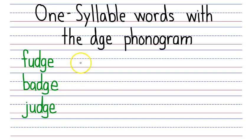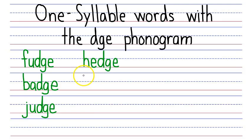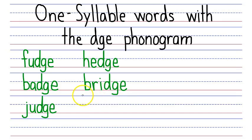Next word is hedge. You have the H that says H, the E that makes the short E sound, and a DGE. Next word is bridge. Bridge starts with the B that says buh and an R that says R, then the short I sound, and then the DGE phonogram that says J. B, R, I, J — say it fast: bridge.